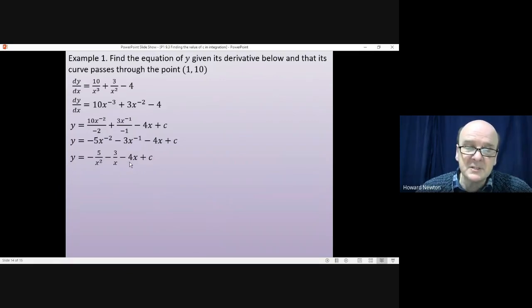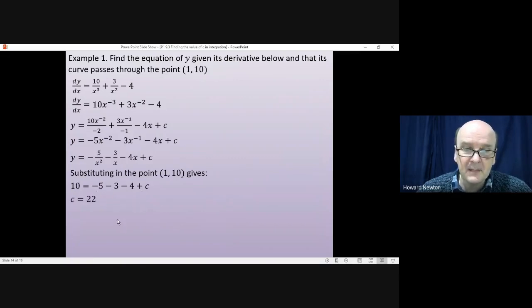So that is the integral. If we substitute in the point (1,10) then we'll be able to find the value of c. So we're substituting in x = 1 and y = 10, and if we do that we'll get 10 on the left hand side is equal to -5 - 3 - 4 + c, and that gives us c = 22.